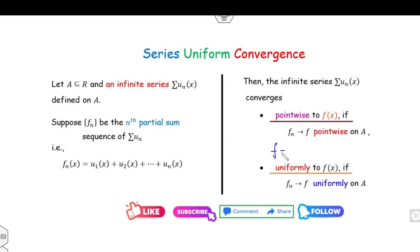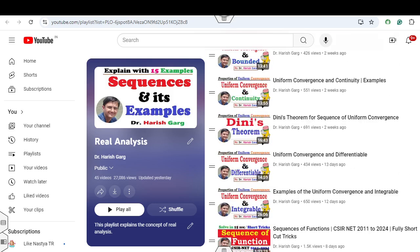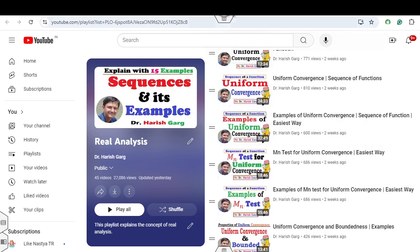And f is the limit as n approaches infinity of fn(x). To understand how to prove that a sequence converges pointwise or uniformly, you can watch the earlier lectures on the definitions of uniform and pointwise convergence.